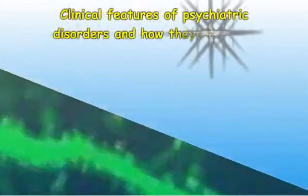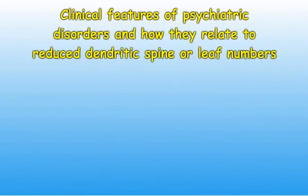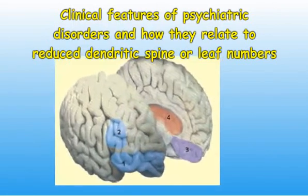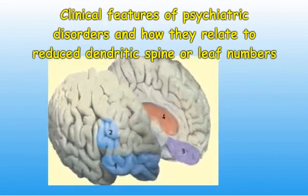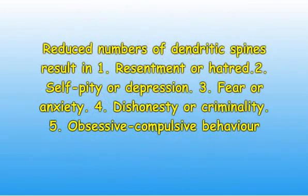And so to the clinical features of psychiatric disorders and how they relate to reduced dendritic spine or leaf numbers. In psychiatric disorders, the reduction in spine or leaf numbers is predominantly in the frontal lobes or front of the brain. Reduced numbers of dendritic spines result in reduced firing rates or electrical activity of the dendrites. This is correlated with the development of increased sensitivity to excessive feel-bad or negative thoughts and feelings of: 1) resentment or hatred.